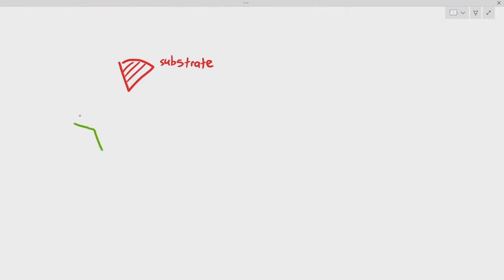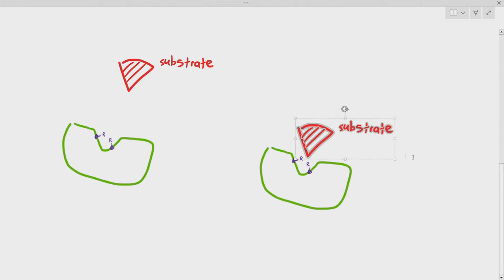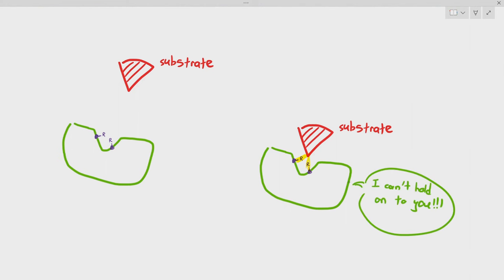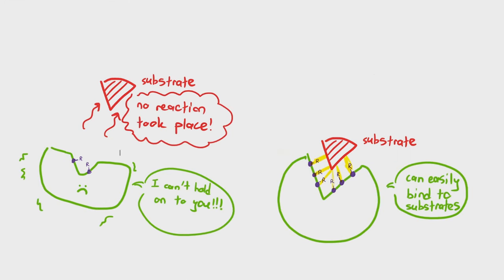Sometimes the active site of the enzyme is built in such a way that it will not have enough other groups to form hydrogen bonds with the substrate, so they cannot grip onto each other to form the ES complex. Enzyme affinity means that if the enzymes and substrates have a high affinity, they will have a very high chance of forming the ES complex, but if they have a very low affinity, they may have an extremely low chance of forming the ES complex, even though they are near each other.